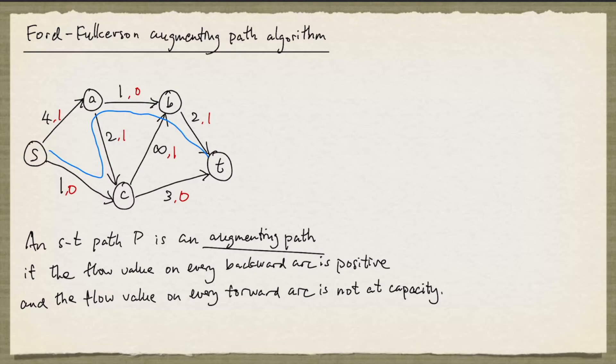Once we have identified an augmenting path, we can obtain an s-t flow with larger flow value. What we do is, on every forward arc, we increase by the same value. And on every backward arc, we decrease by that same value. The increase we take will be as large as possible so that we still end up with an s-t flow.